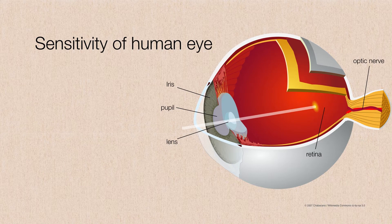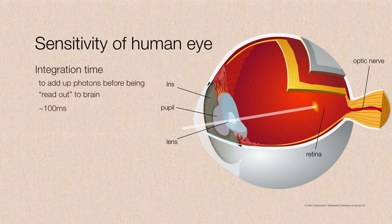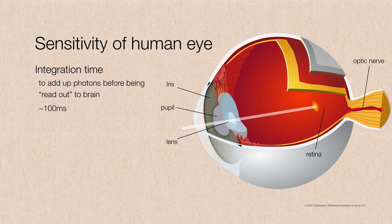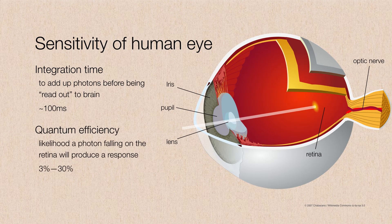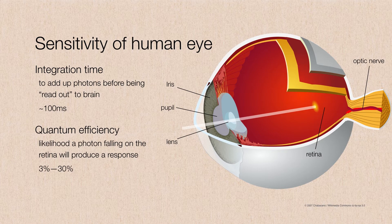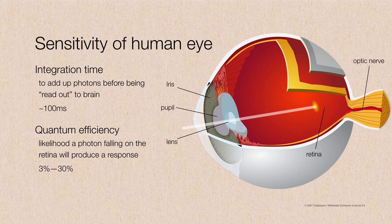Now the eye can collect information for about a hundred milliseconds. This is something known as the integration time. It's the amount of time the eye can spend collecting data before it reads it out along the optic nerve to the brain. But the eye also has a rather low quantum efficiency. And that means that about three to thirty percent of all of the photons falling into the eye are actually captured on the retina and read out to the brain. So think about that for a minute. We are missing 70 to 97 percent of all of the light that we are supposed to be seeing.